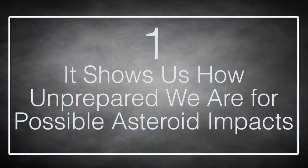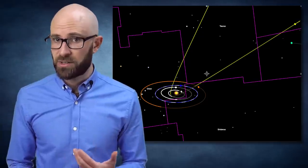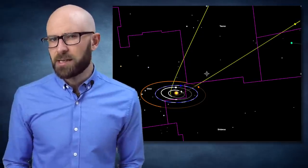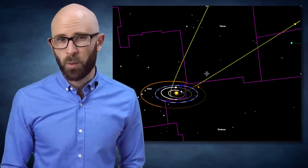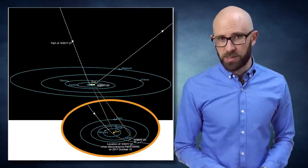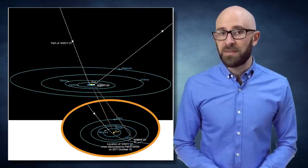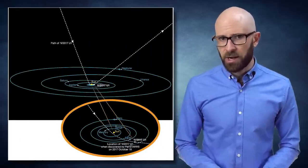Number 1. It Shows Us How Unprepared We Are For Possible Asteroid Impacts. One of the things Oumuamua can teach us is how to better detect near-Earth and potentially hazardous objects. But its sudden appearance to our telescopes is a bit of a wake-up call. Were Oumuamua's trajectory headed towards Earth, it would have hit us before we'd even seen it.